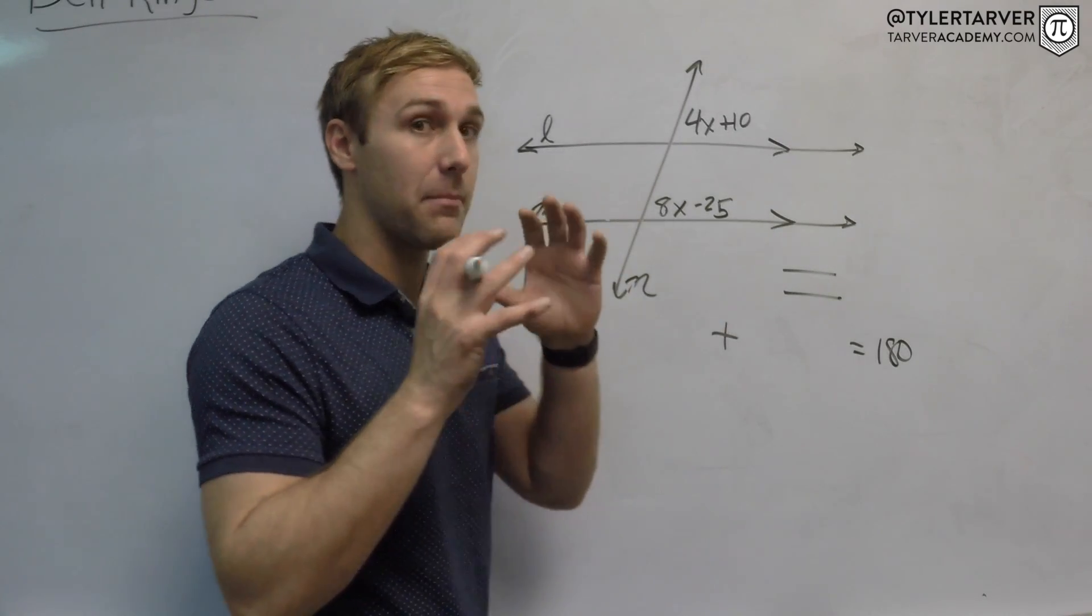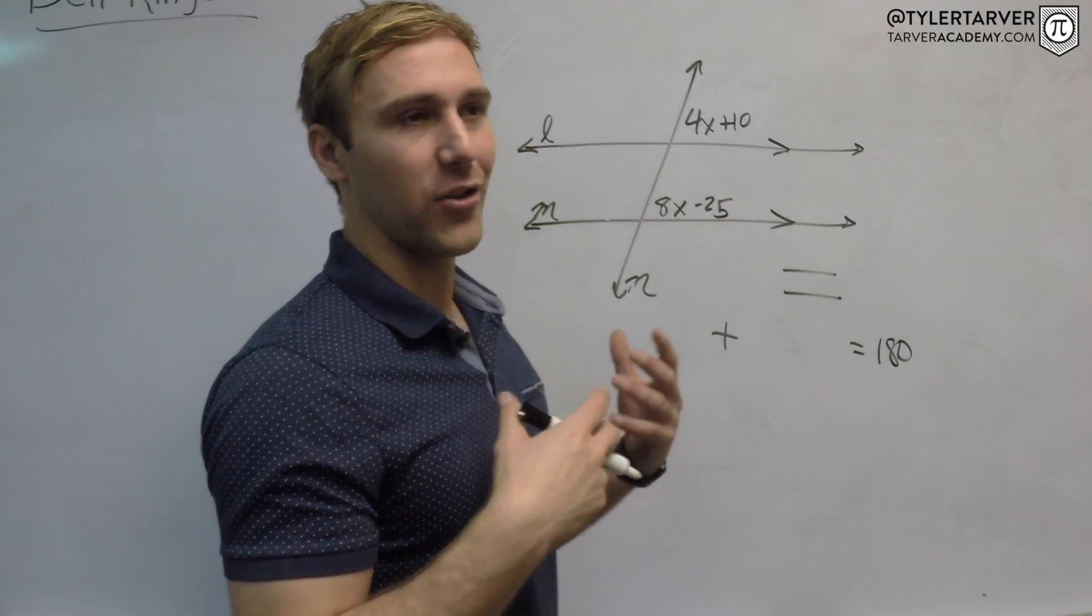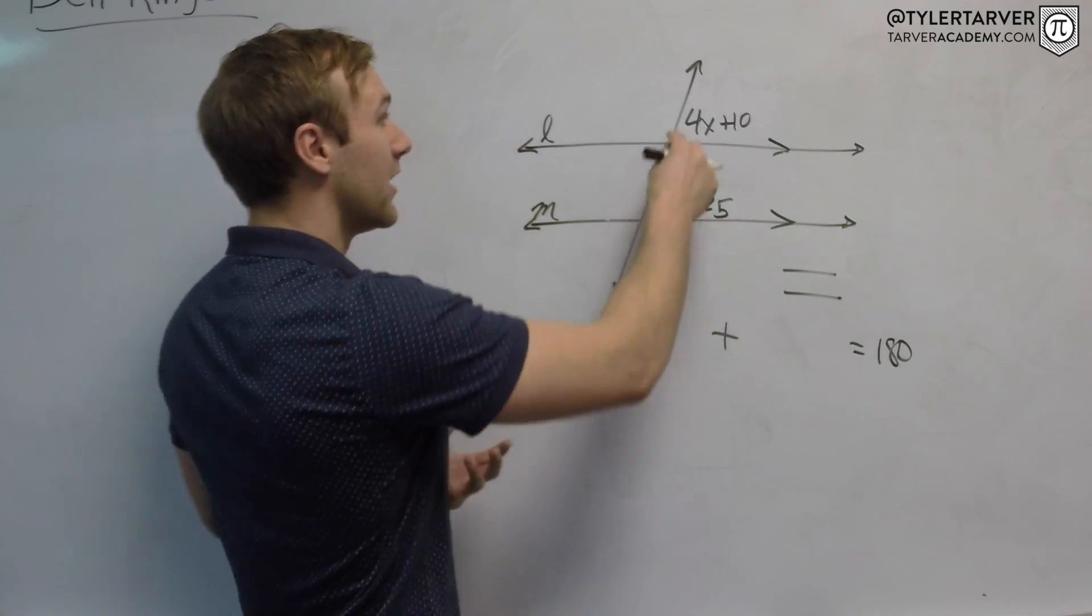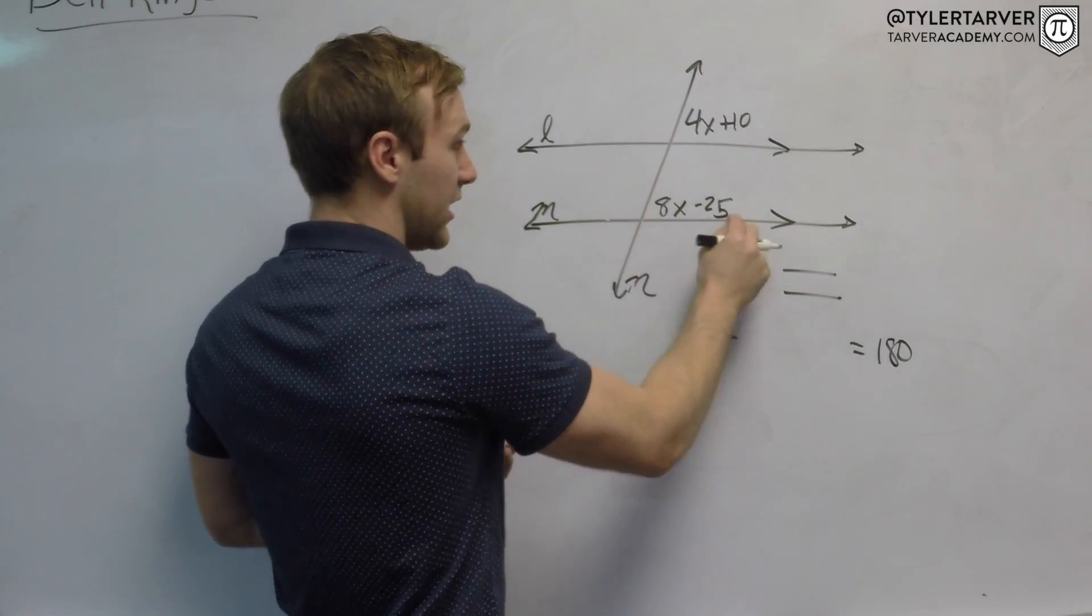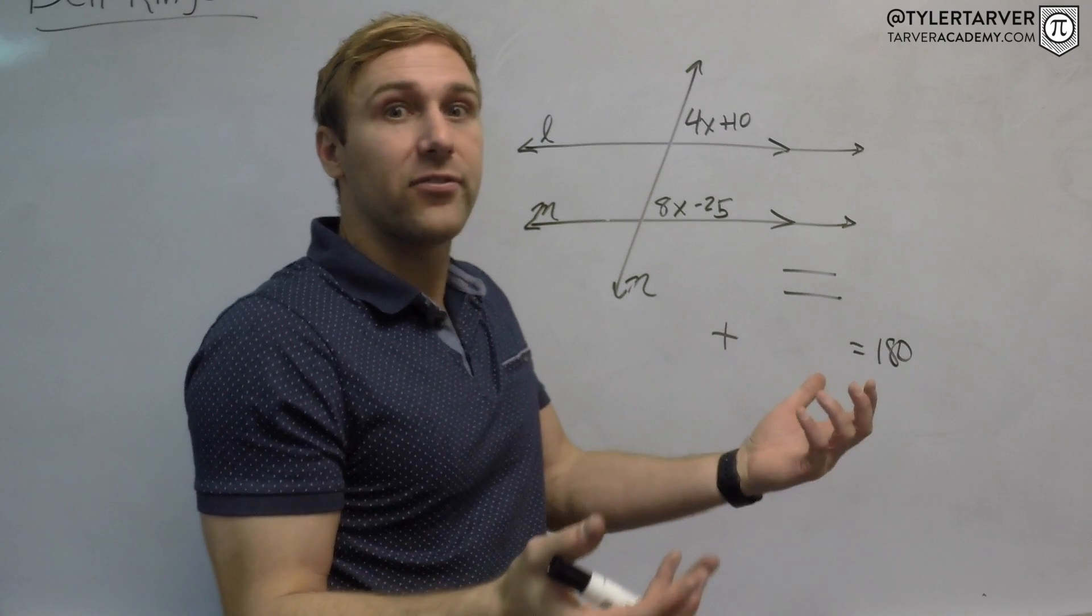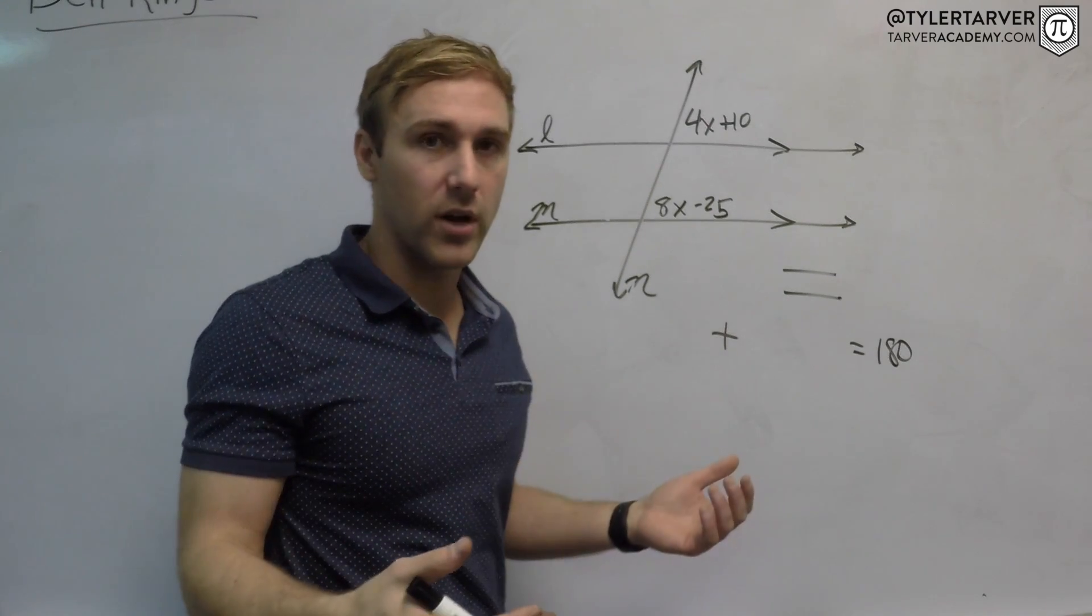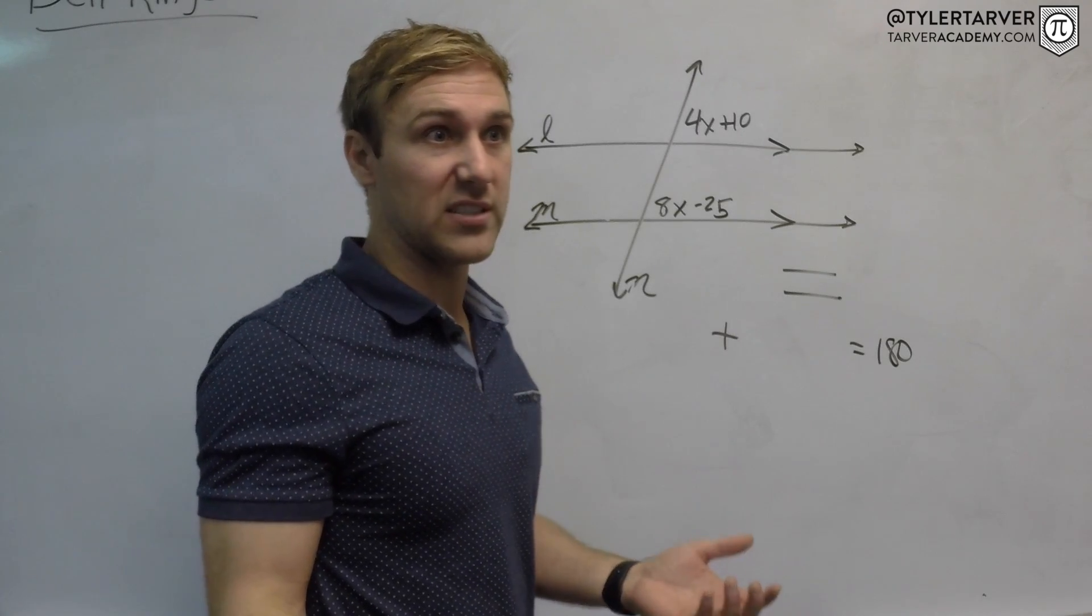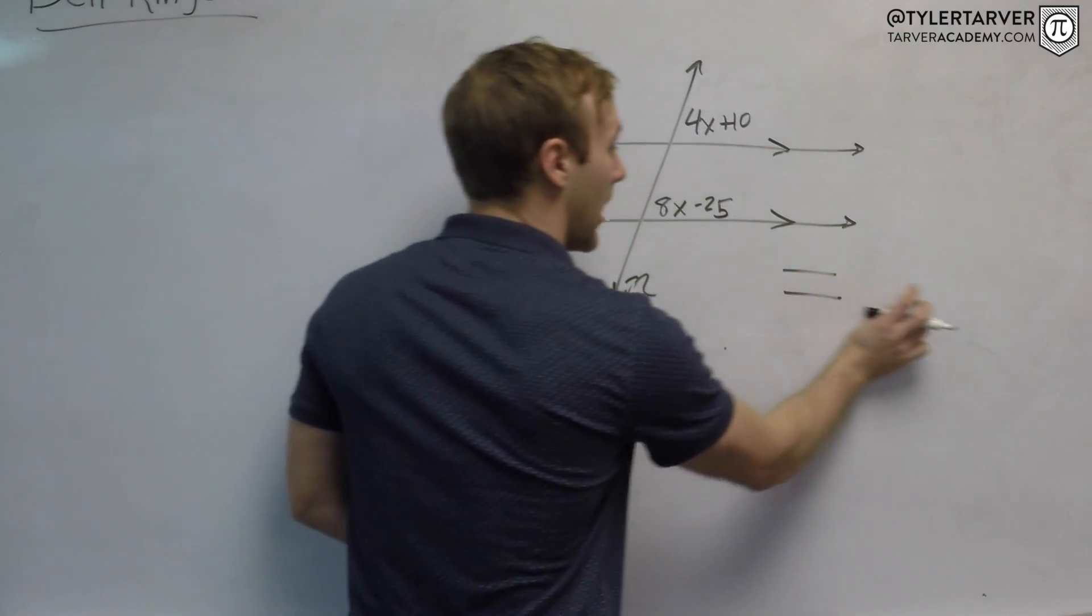Looking at it, I call this the TBL method - tell by looking. This angle is acute, less than 90. This angle is acute, less than 90. They have to be equal. You cannot have two acute angles that add up to 180 because they're both less than 90. So I know these are going to be option A - they're equal to each other.